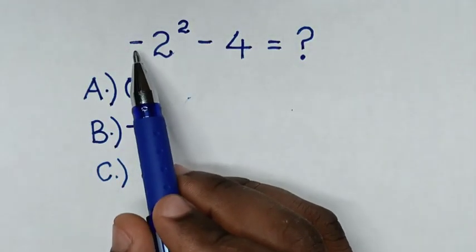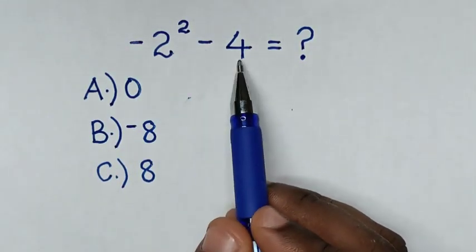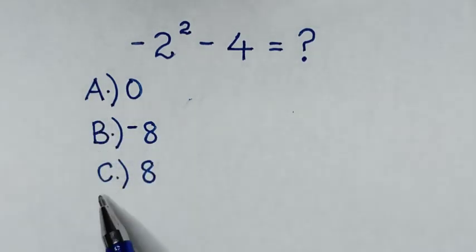Hello, how to solve negative 2 squared minus 4 by selecting the answer in A, B, or C.